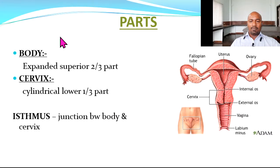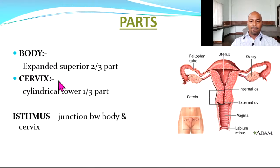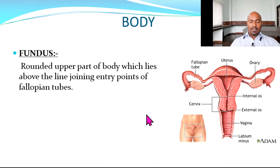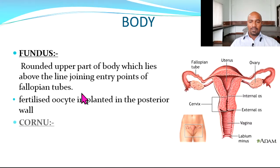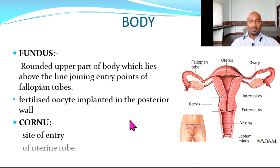Coming to the parts — the uterus has a body (the main portion), a cervix (the neck), and an isthmus which is the narrow part between the body and the cervix. The body has an upper dome-shaped part called the fundus. The body constitutes the superior two-thirds, the cervix is the cylindrical lower one-third, and the isthmus is the junction between body and cervix. The fundus is the rounded upper part lying above the line joining the entry points of the fallopian tubes, and fertilized oocytes generally implant in the posterior wall of the fundus.